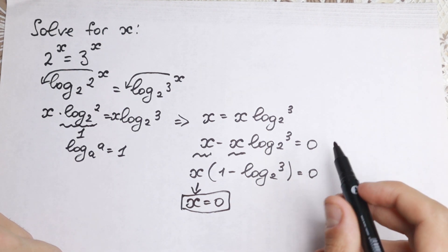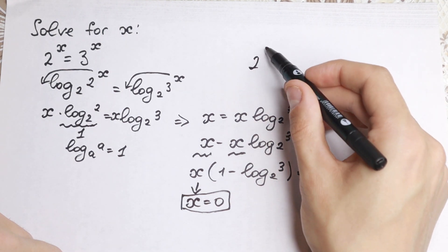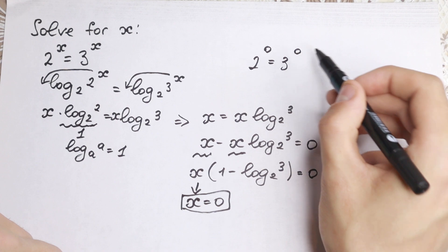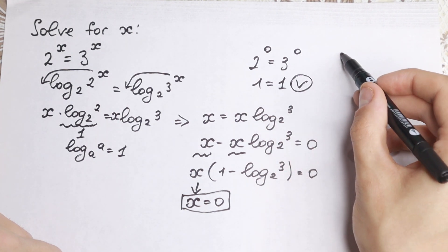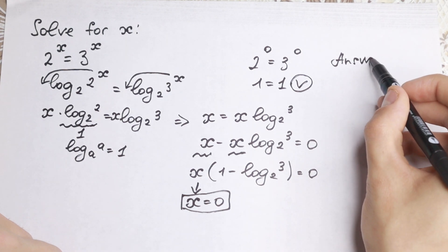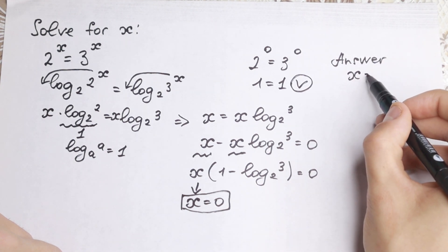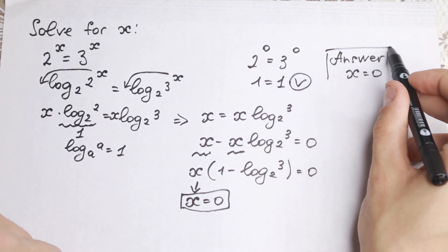Let's check this solution real quick. We have 2^0 equals 3^0, which is 1 equals 1. So our root is good for us, and we finally find our answer: x equals 0. This is our solution.